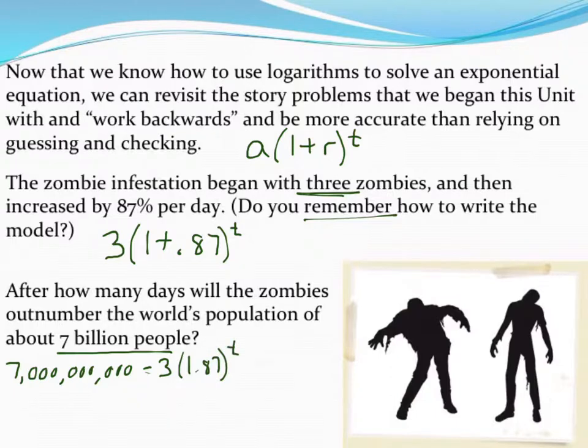So this is what I now am able to solve algebraically. We could not have done this before. So I want to start with dividing both sides by three. I can't multiply three and 1.87, that's not allowed. So I'll divide both sides by three, which leaves me with two billion.